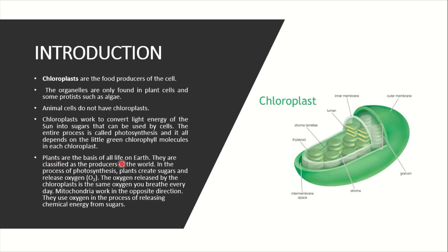We know that whatever life exists on Earth, it is based on plants. If we talk about classification, plants are classified as a producer. The process of photosynthesis: plants create sugar and release oxygen. This is the source of oxygen.